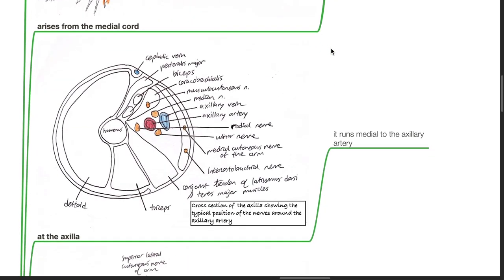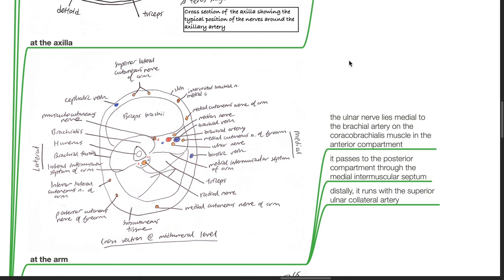At the axilla, it lies medial to the axillary artery. At the level of the arm, the ulnar nerve lies medial to the brachial artery on the coracobrachialis muscle in the anterior compartment. It passes to the posterior compartment through the medial intermuscular septum, distally it runs with the superior ulnar collateral artery.